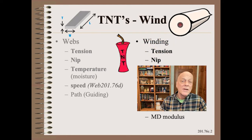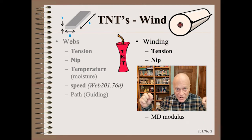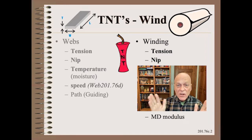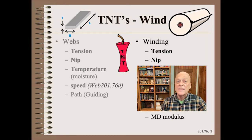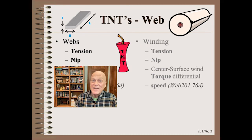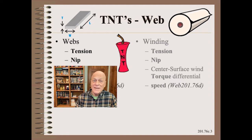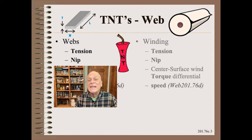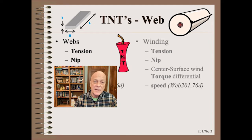My students will also recall that the web's MD modulus has at least as much effect on wound roll tightness as do the T and T's of winding. Did you know that there are also T and T's for the web? You might be excused if you haven't heard, because I only made that up a few years ago. The tension, nip, and speed controls are the same as with winding, so no new concepts here.